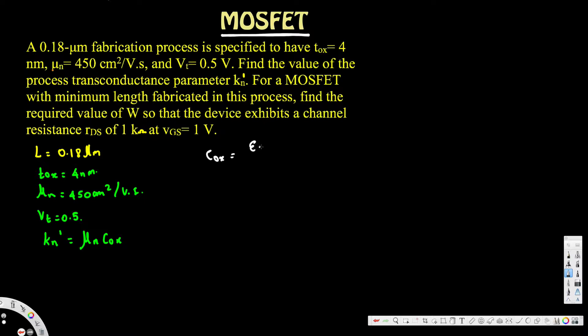Cox can be calculated using the formula: Cox equals epsilon_ox divided by tox, where epsilon_ox is the permittivity of silicon dioxide — a fixed constant value. Plugging in, Cox equals 3.45 times 10 to the negative 11 divided by 4 times 10 to the minus 9, which gives us 8.6 times 10 to the minus 3 farads per meter squared.